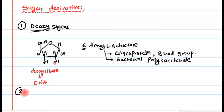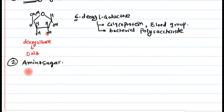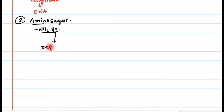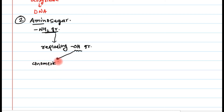Now let's move to the second type of sugar derivative: amino sugars. As the name suggests, an amino group — an NH2 group — is present. In amino sugars, this NH2 group replaces one of the OH groups. In a sugar, there are two types of OH groups: the anomeric OH group, which resides on the anomeric carbon, and the alcoholic OH group.